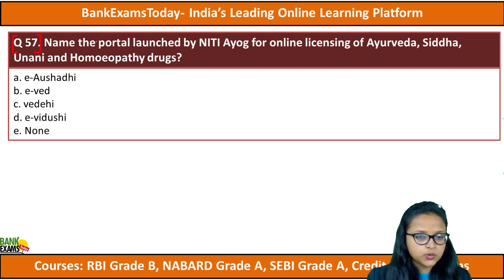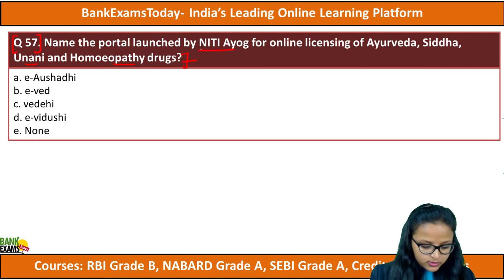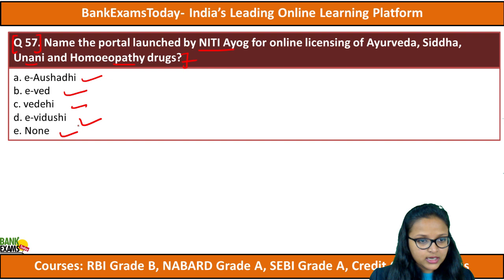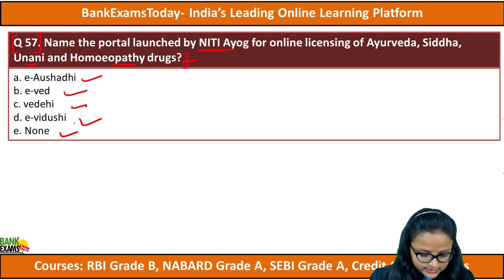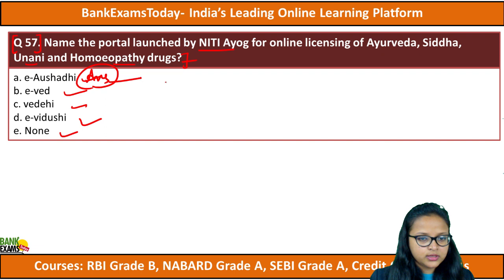Moving to question number 57: name the portal launched by NITI Aayog for online licensing of Ayurveda, Siddha, Unani, and Homeopathic drugs. The options are E-Aushithi, E-Vedvidehi, E-Vidushi, and none of the above. The answer is A — E-Aushithi is the portal to get online licensing for Ayurveda, Siddha, and Unani medicines.